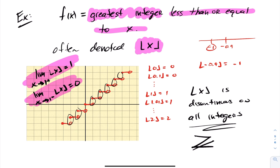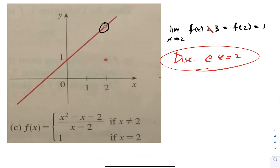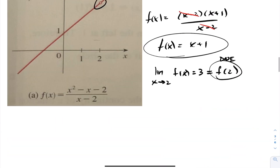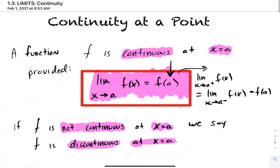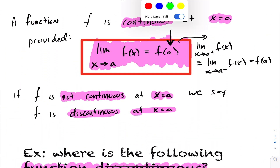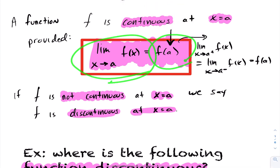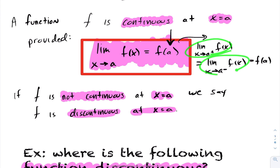That concludes this example and our description of continuity. Feel free to review these examples. Remember: when defining continuity, the limit as x approaches a of the function must equal the function at a — meaning the limit from the left and right must equal, and that must equal the function at a.